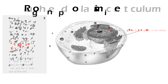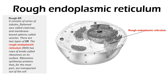Rough endoplasmic reticulum — or rough ER — consists of a series of tubules, flattened sacs called cisternae, and membrane-bound spheres called vesicles. The rough ER has rows of knobs called ribosomes on its surface. Ribosomes synthesize proteins that, for the most part, are transported out of the cell.